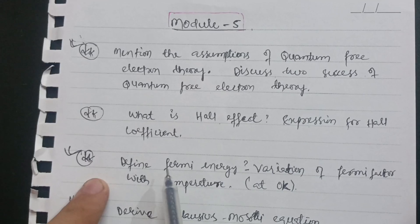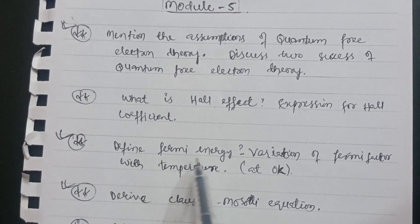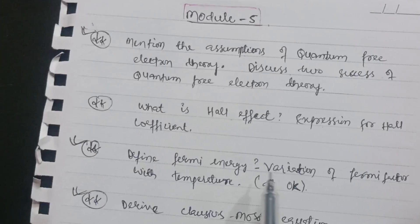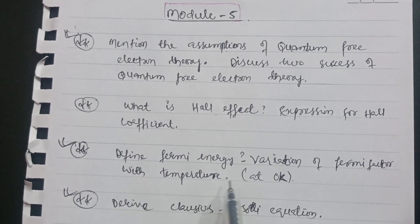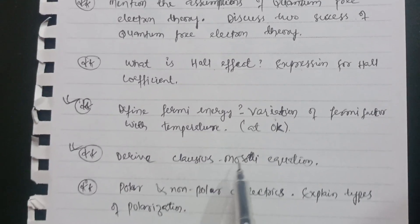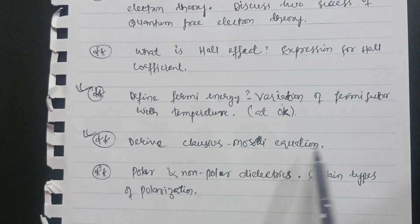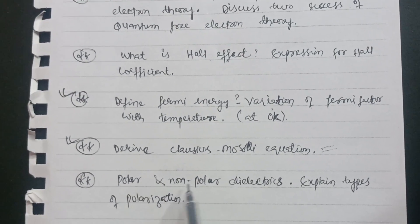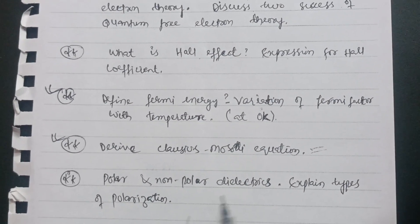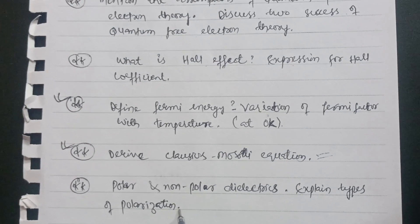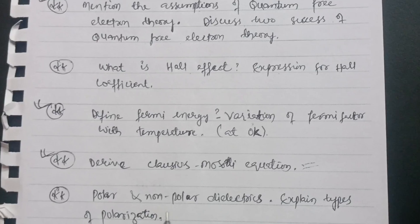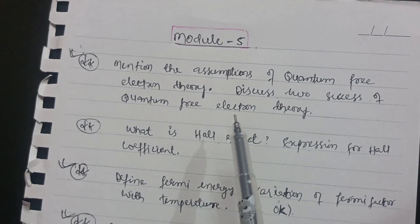Another very important topic in Module 5 is: define Fermi energy and explain the variation of Fermi factor with temperature, including the small derivation at zero Kelvin. Also, derive the Clausius-Mossotti equation — this is one of the most important questions. Finally, cover polar and non-polar dielectrics definitions, and explain the types of polarization with clear diagrams.